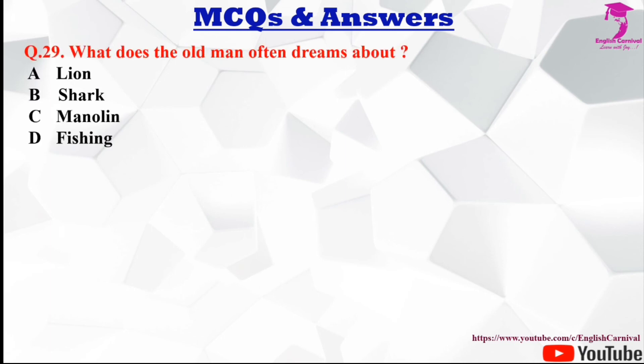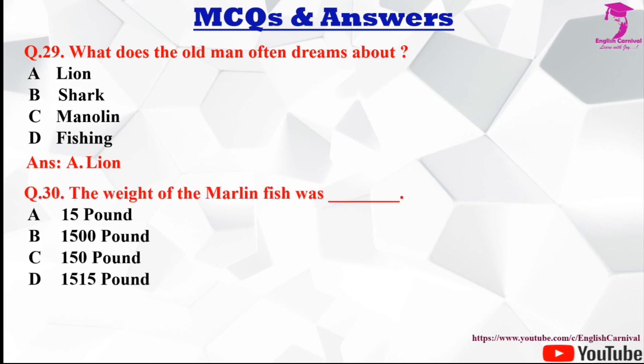Question number twenty-nine: What does the old man often dream about? Options are A lions, B sharks, C Manolin, and D fishing. The correct answer is A, lions.